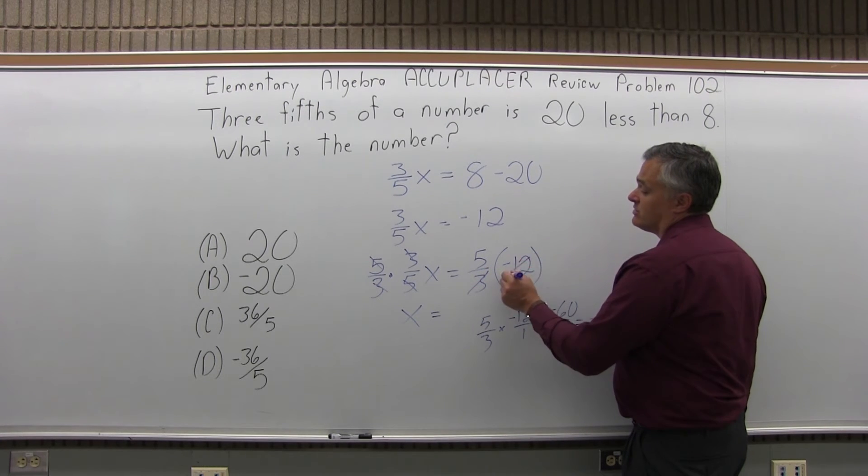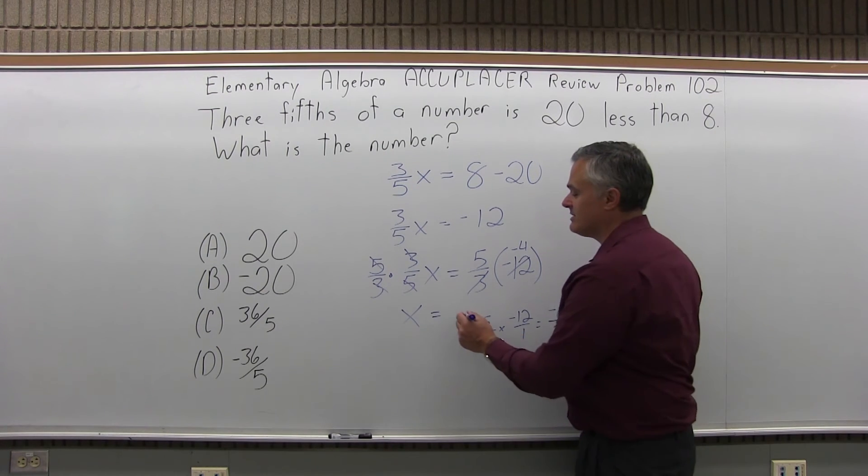What I saw was the three reduces the minus 12 to a minus four, five times four is minus 20. You get the same thing either way.